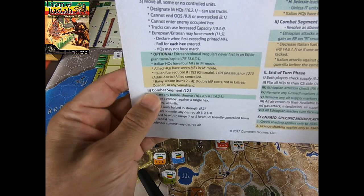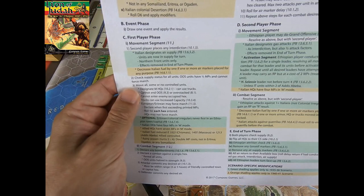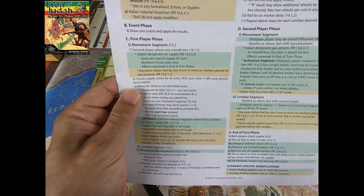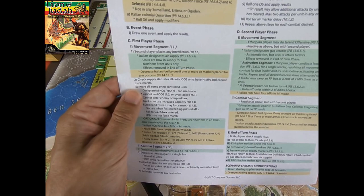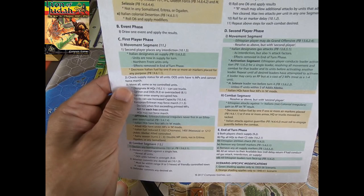After the Event Phase, we have a traditional movement and combat segment — nothing difficult to understand. Remember that the Italian army can use air points and resource points to increase combat power, specifically to shift columns on the combat chart. Also remember that there is a general combat chart, and a separate combat chart used only by the Ethiopian army when it attacks.